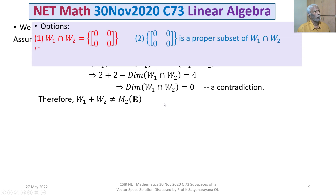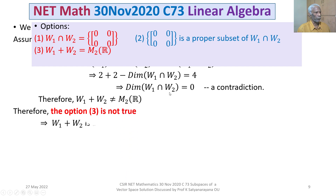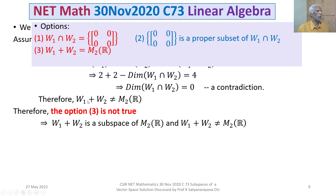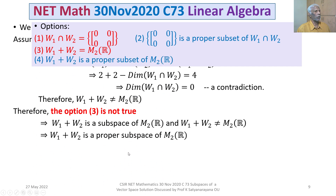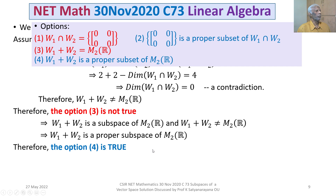Looking at our options: option 3 says W1 + W2 = M2 over R, but we have shown this is false, so option 3 is not true. Since W1 + W2 is a subspace of M2 over R and is not equal to it, it is a proper subspace. Therefore option 4 is true. In all, the final answer is that options 2 and 4 are true.